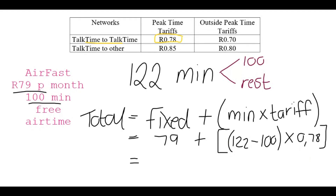When you work this out, you get 97 rand and then there's a 7 — but since we're working with money, you need two digits in the cents place, so it's 70 cents, making the total 97 rand 70 cents. Remember to subscribe, share, and become part of the Whiteboard team for more videos like this.